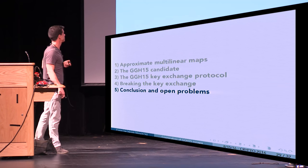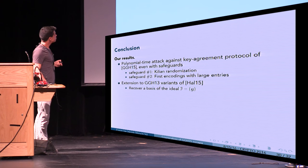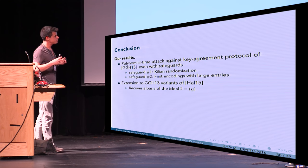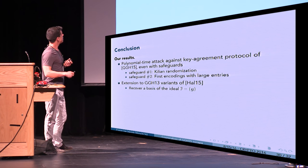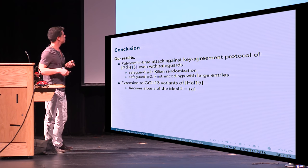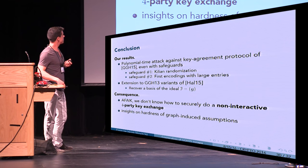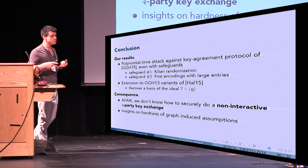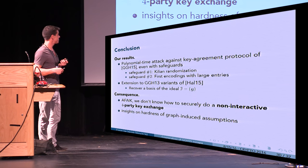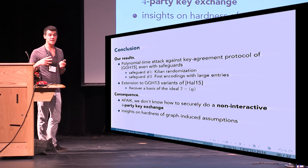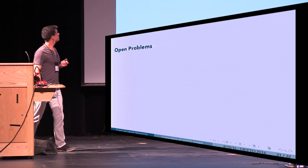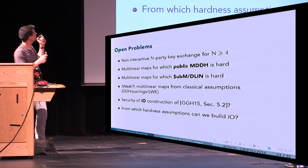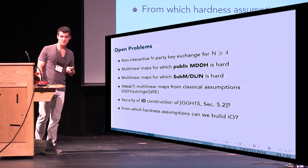To conclude: we described an attack against the key agreement of GGH15, even with the safeguards described in the papers, and it extends in a way to the variant of Halevi. We don't know how to use this attack to build a non-interactive four-party key exchange not going through I.O., but it gives insight into the graph induction assumption. These are the open problems — thank you for your attention.